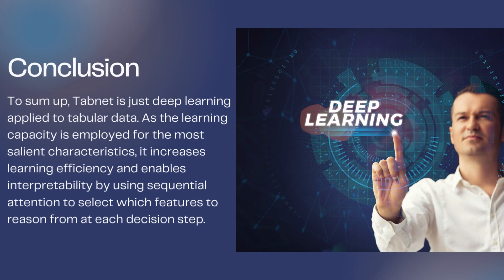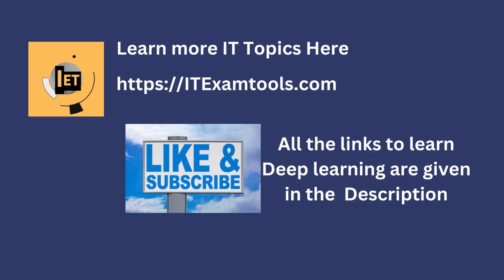Conclusion: to sum up, TabNet is deep learning applied to tabular data. As the learning capacity is employed for the most salient characteristics, it increases learning efficiency and enables interpretability by using sequential attention to select which features to read. All the links to learn deep learning are given in the description. Please like and subscribe to our channel to learn more IT topics.